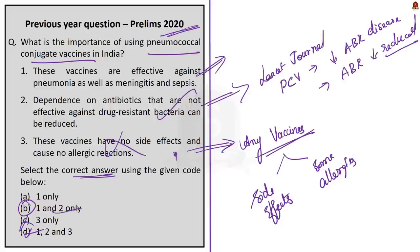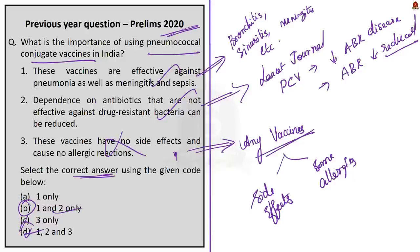To justify why statement one is correct: apart from pneumonia, the pneumococcal conjugate vaccine is also highly effective against other diseases like bronchitis, sinusitis, bacteremia, meningitis, and sepsis. That is why statement one is also correct. The final answer for this question is option B: one and two only.